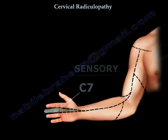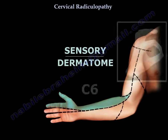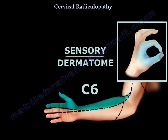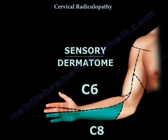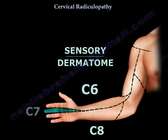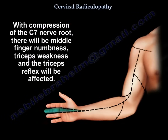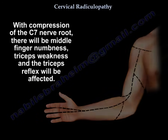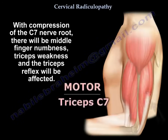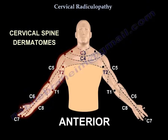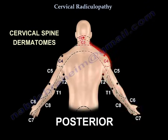Going one way from the middle finger, it will be C6; going the other way, it will be C8. If you have C7 nerve root involvement, you will get middle finger numbness, triceps weakness, and the triceps reflex will be affected. This is an easy way to remember the dermatomes and muscle function.